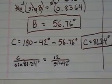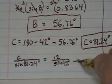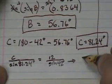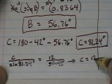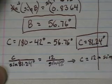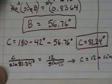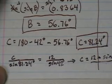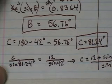And if I multiply that, I will get c equals 12 times sine of 81.24 divided by sine of 42.